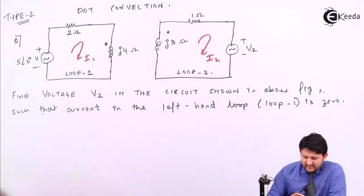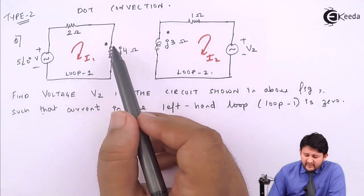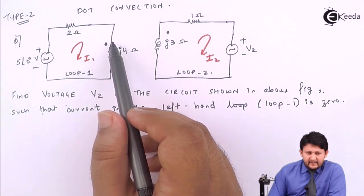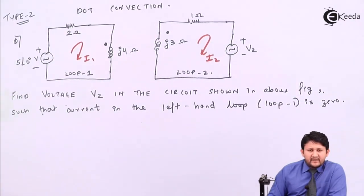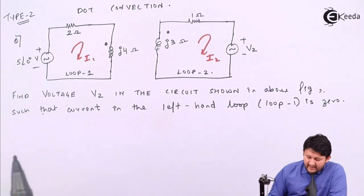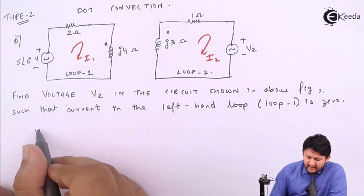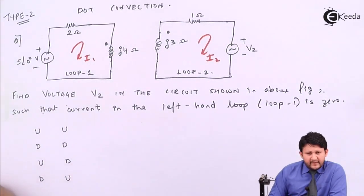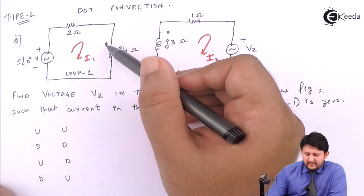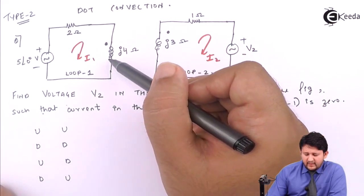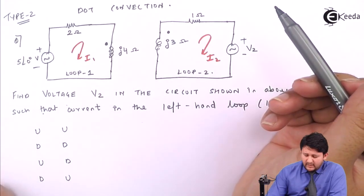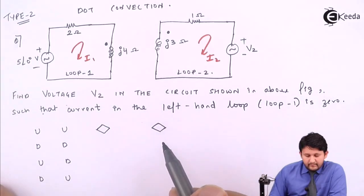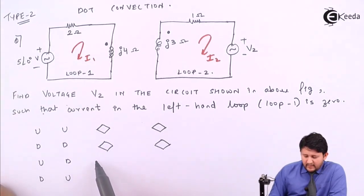First, regarding dot convention, I need to clear the concepts before moving further. To remove the dot, observe the dot position in both inductors — it is important. The dots can be both up, both down, or a combination of up-down. If both are in the up-up direction, replace it by a voltage source; down-down also becomes a voltage source; up-down becomes a voltage source.